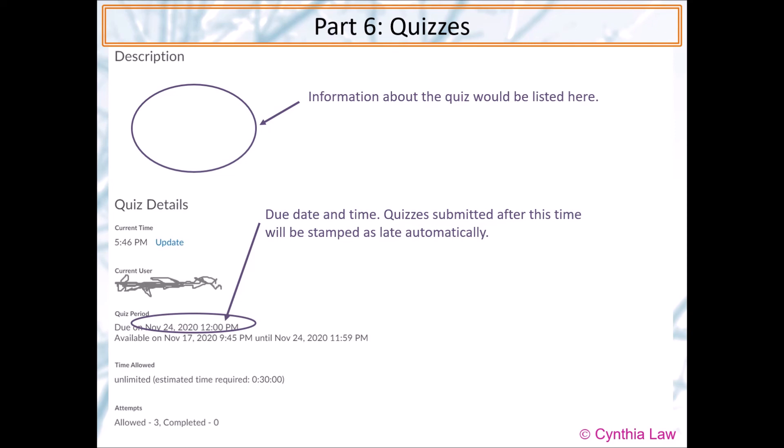You can see the due date and time. If you submit a quiz after the time, it will be stamped as late automatically. And that is also an end date and time. So this is the absolute deadline. After that, you will not be able to submit the quiz anymore.